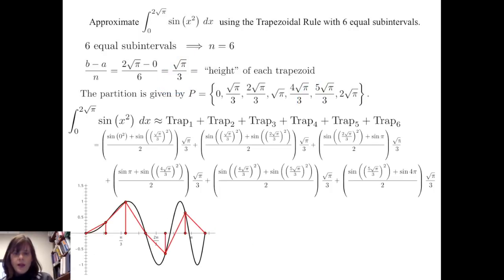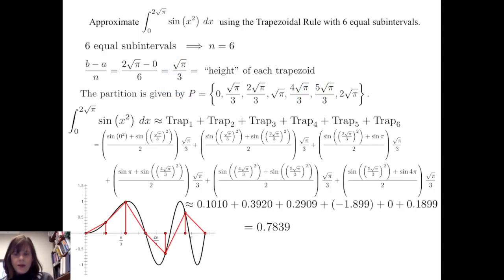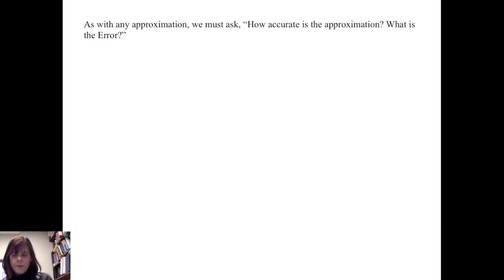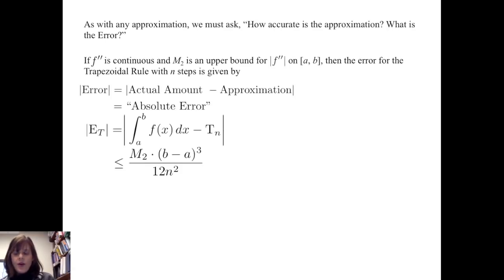When we put these pieces together and approximate the values, we get that the definite integral from 0 to 2√π of sine of x squared dx is approximated by 0.7839. As with any approximation, we must ask: how accurate is the approximation? What is the error?